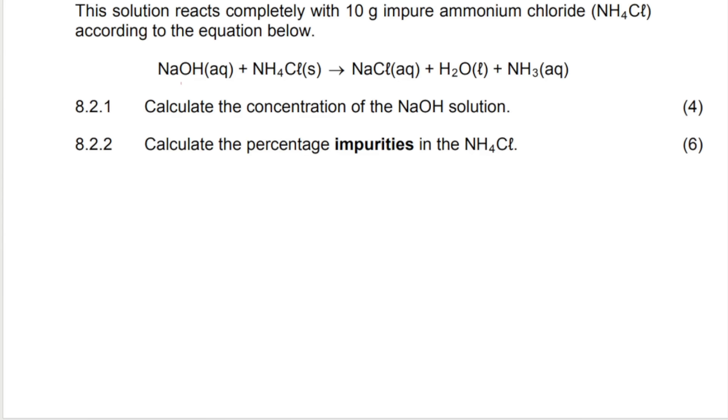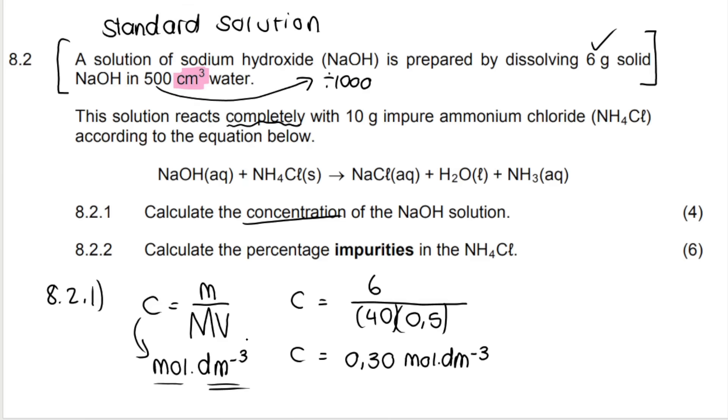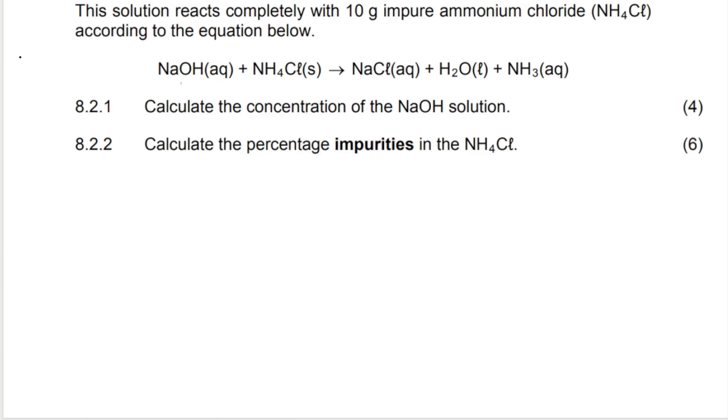They then say that this solution, so the solution that we just calculated the concentration of. So let's just write down what we know. We know that the NaOH solution contains a mass of 6 grams, the volume is 0.5 cubic decimeters, and the concentration is 0.3 moles per cubic decimeter.